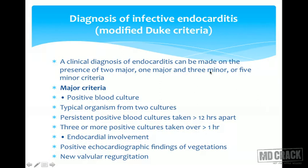The modified Duke's criteria are used to diagnose infective endocarditis. A clinical diagnosis can be made on the presence of two major criteria, or one major and three minor criteria, or five minor criteria.